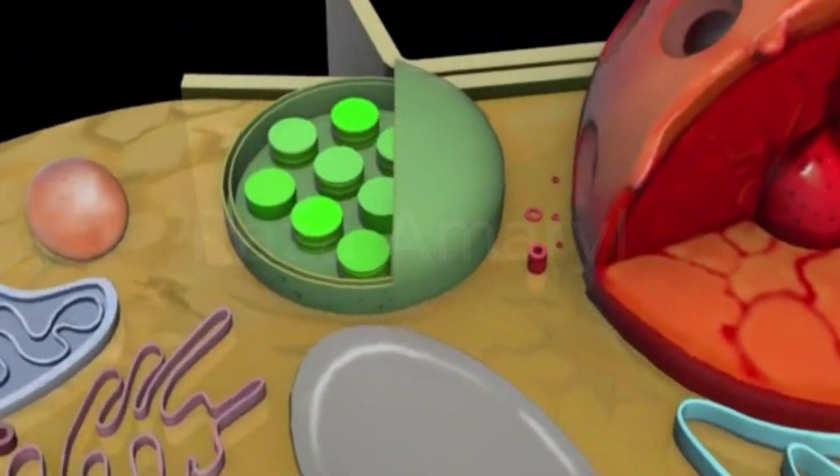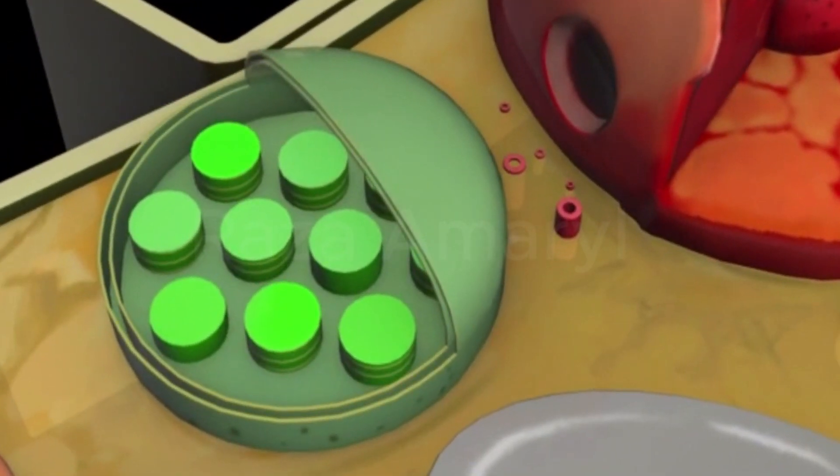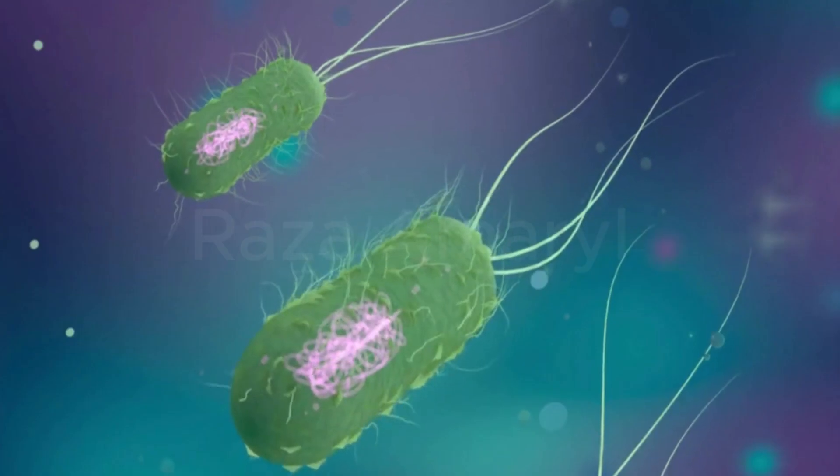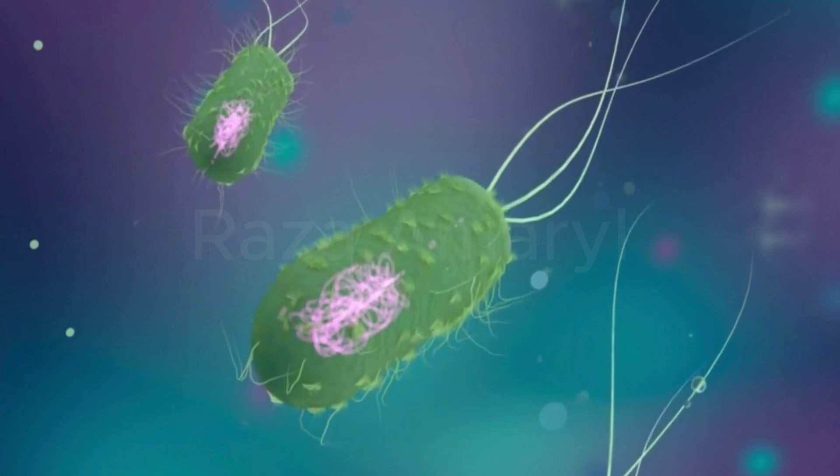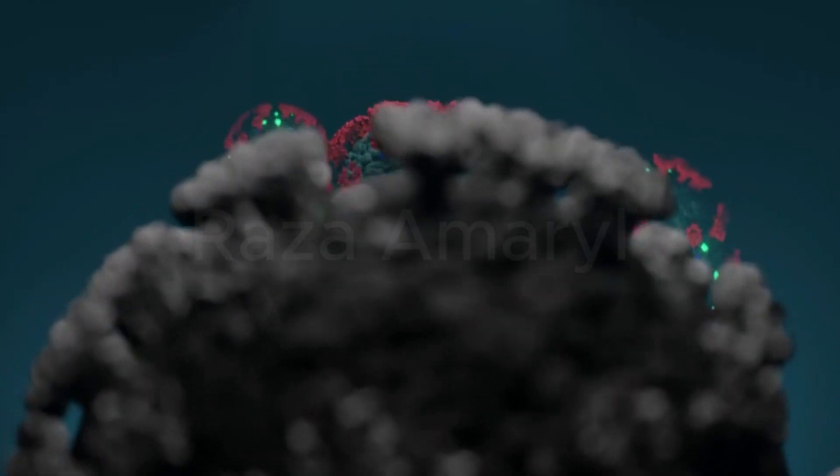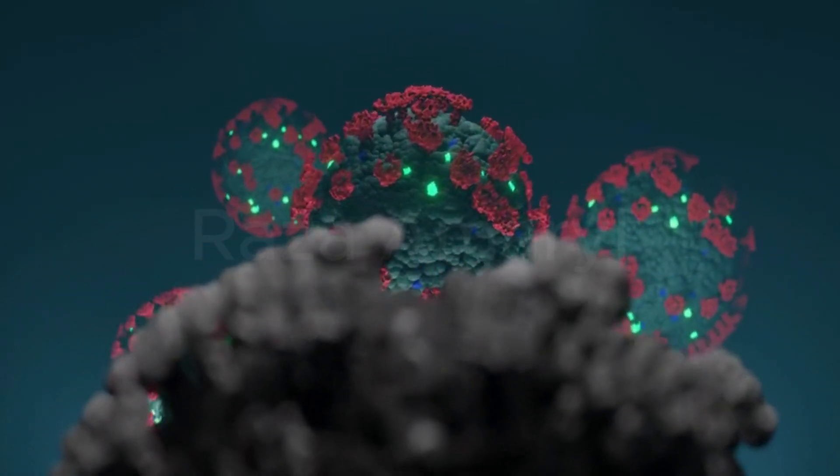The ribosome reads the mRNA codons in sets of three, and as each codon is read, the corresponding amino acid is added to the growing protein chain. This process continues until a stop codon is reached, signaling the end of protein synthesis.